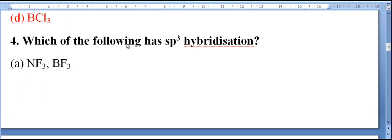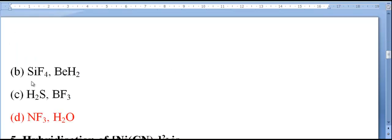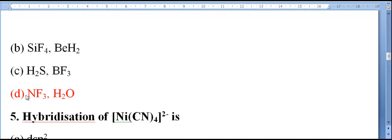Which of the following has SP3 hybridization? First option: NF3BF3, second option: SiF4BH2, third option: H2SBF3, fourth option: nitrogen trifluoride and H2O. This is the correct answer. SP3 hybridization in this case: nitrogen trifluoride and H2O.